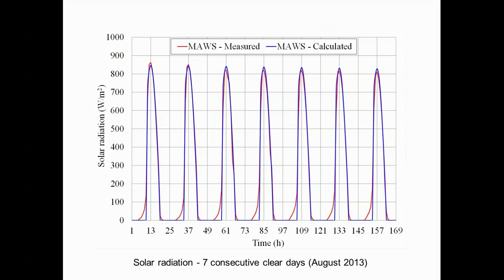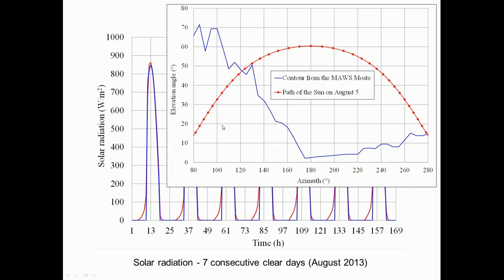At the location of the weather station, solar radiation during seven consecutive clear days was measured and calculated. The measured and calculated times of the beginning and end of insolation match very well, indicating that the described method of determining the effect of shading is very effective. From the results of measurements, the influence of diffused light — which occurs before and after the end of direct insolation — can be seen. It is also evident that the effect of shading in the morning is greater than in the afternoon, since the weather station position is more open to the west.